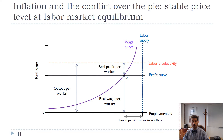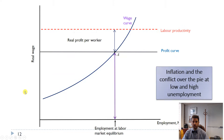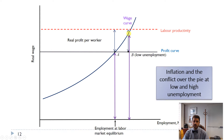In the macro economy, there are always things changing — we're always moving along in the business cycle, always having shocks because of changes in natural resource prices, weather, or something else. Let's see what happens to wages and prices when we move through the business cycle. When we have a boom, unemployment shrinks, and that means we move up the wage curve and workers are getting a higher real wage.